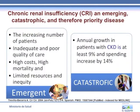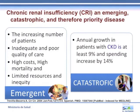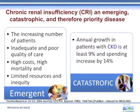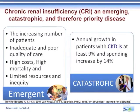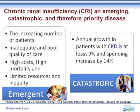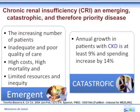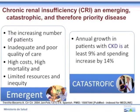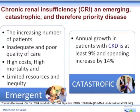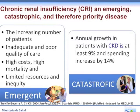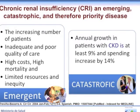Chronic renal insufficiency is an emerging, catastrophic, and priority disease, emerging by the increasing number of patients, inadequate and poor quality of care, high cost, high mortality, and limited resources and inequality. It is catastrophic because annually the patient population with CKD grows by at least 9% and spending increases by 14%.